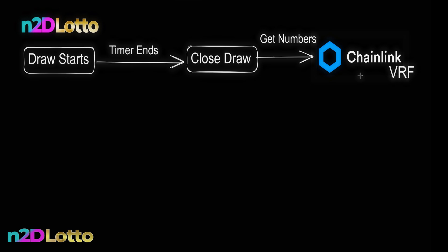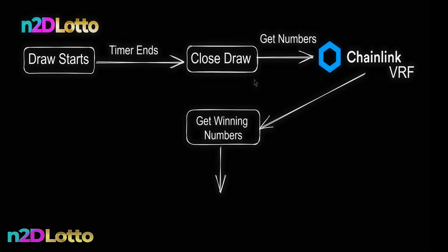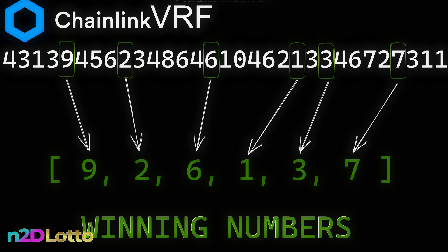So when I close the draw, I reach out to Chainlink and say: give me the winning numbers. But Chainlink is going to give me a very long number value, and from that I am going to slice out the six numbers that I need. That's number one — one of the most important things we have to do.